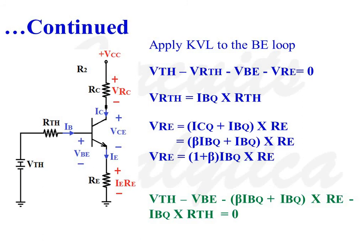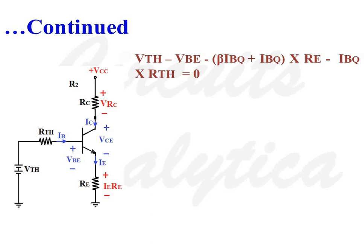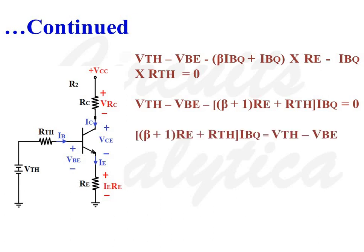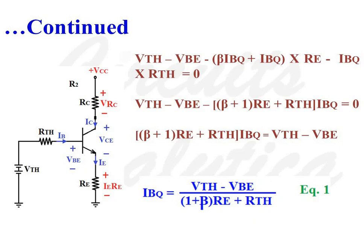Substituting and rearranging: VTH minus VBE minus (1 plus β)·RE·IBQ minus RTH·IBQ equals 0, which simplifies to VTH minus VBE equals IBQ·[(1 plus β)·RE plus RTH]. Therefore, IBQ equals (VTH minus VBE) divided by [(1 plus β)·RE plus RTH] — equation number 1.